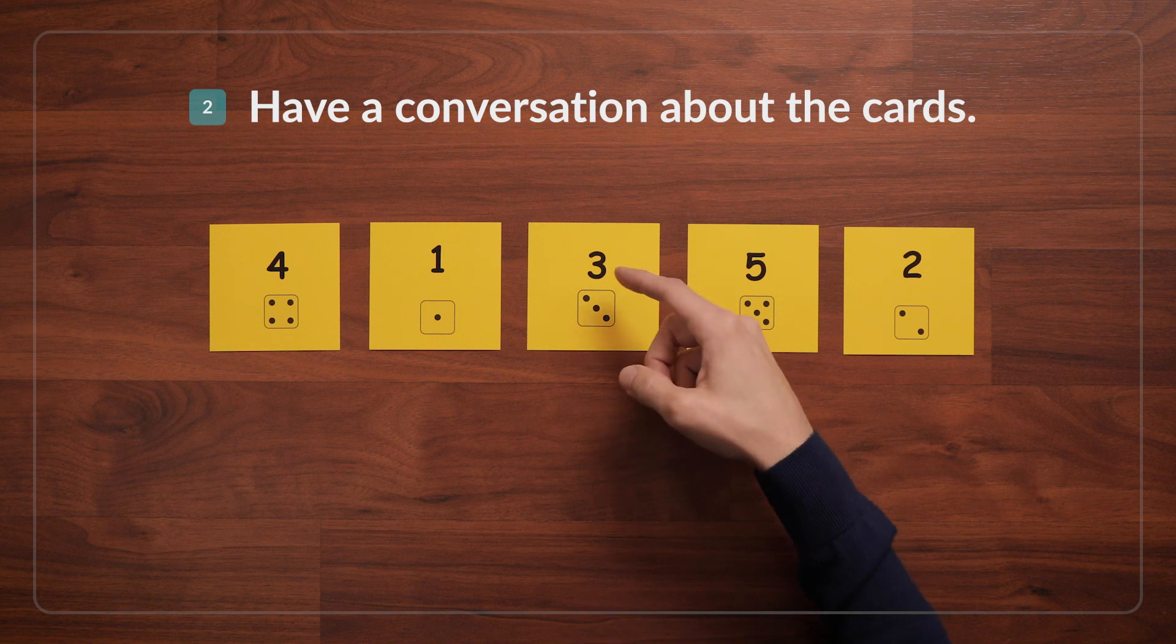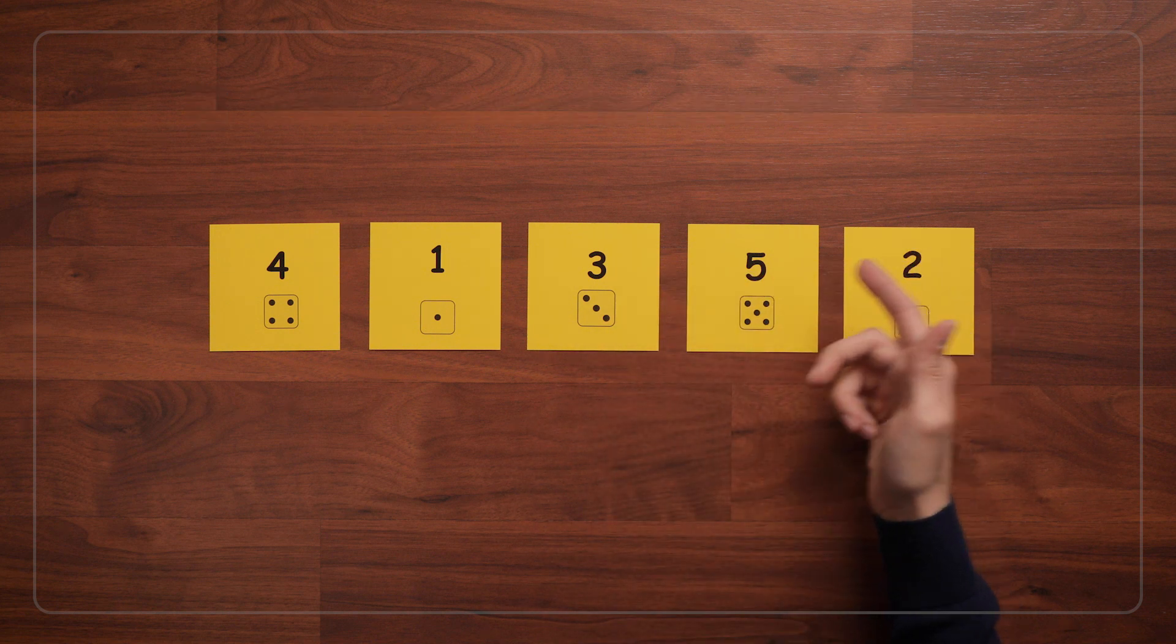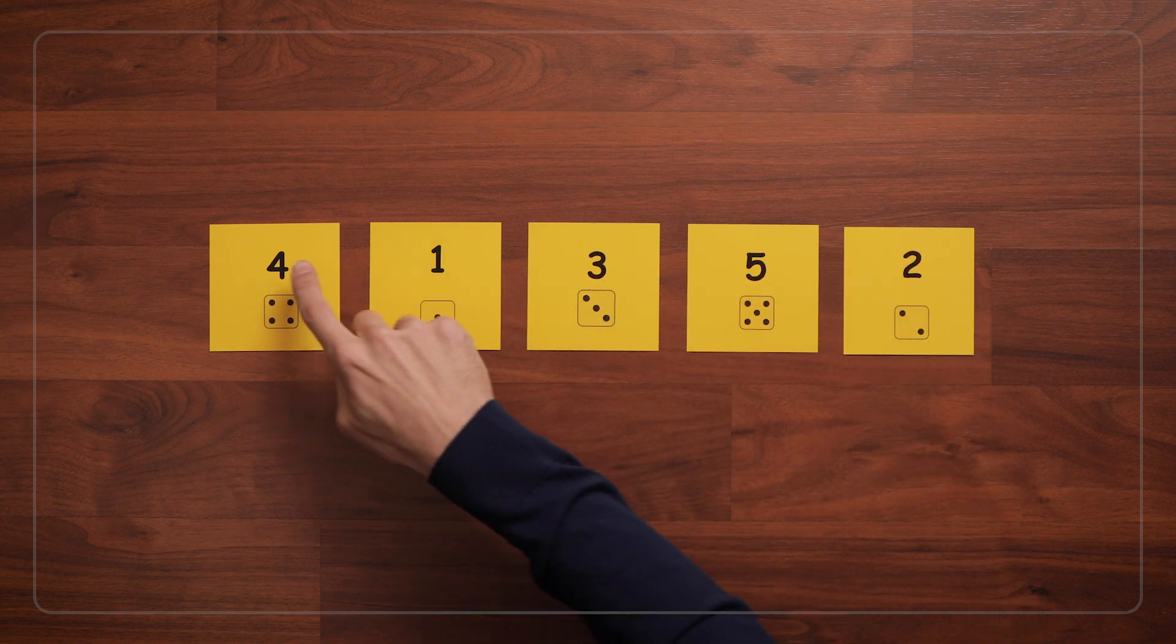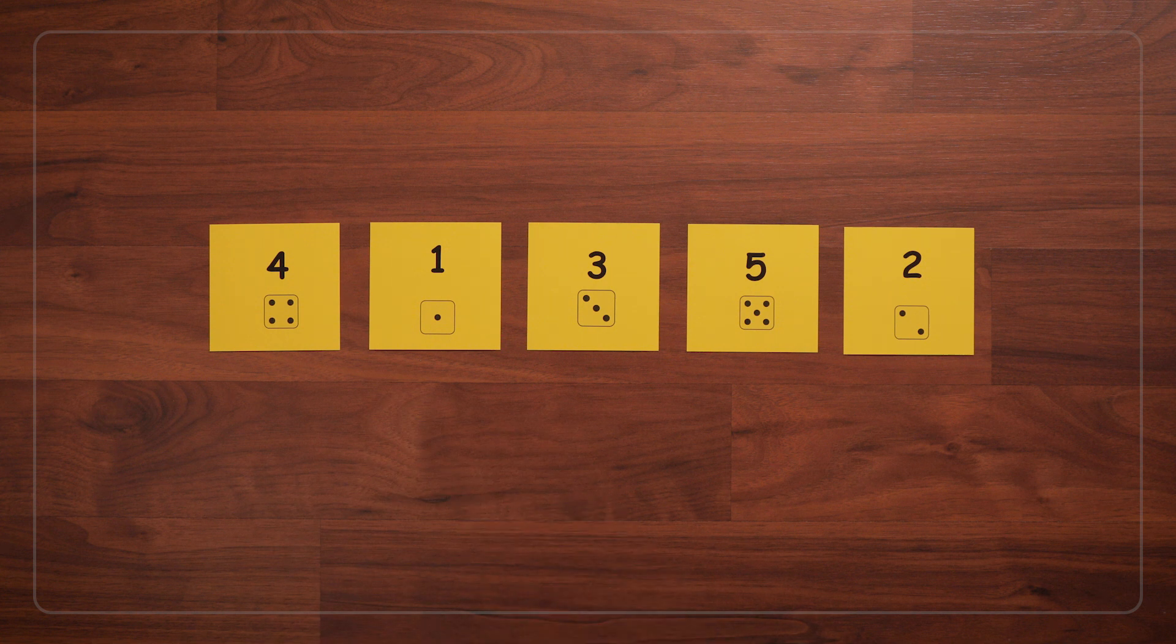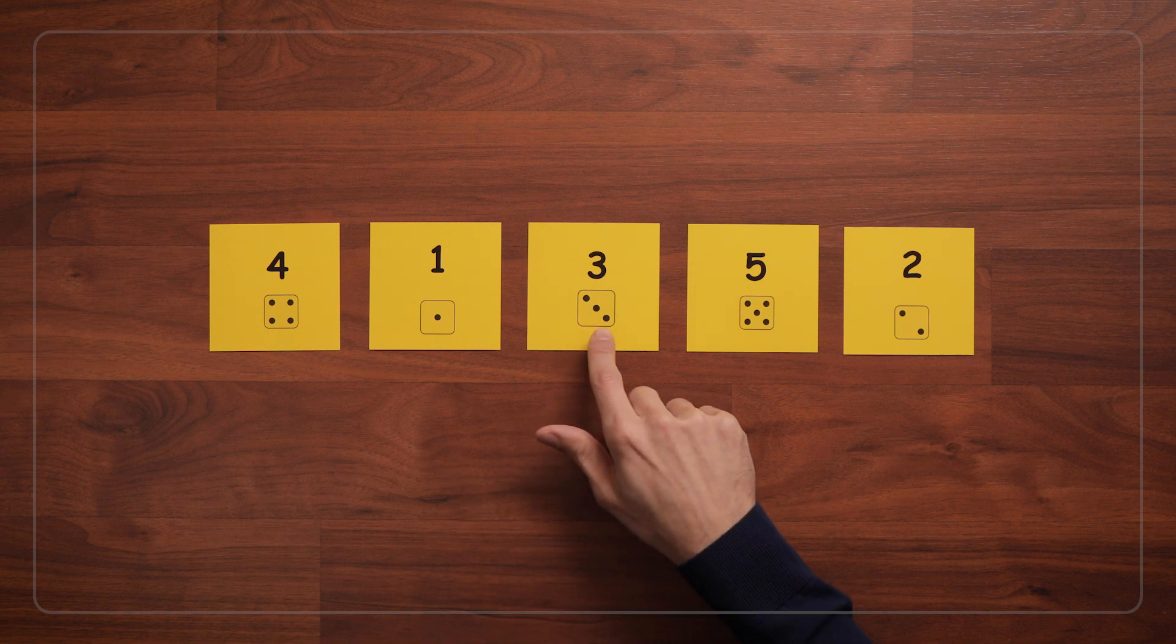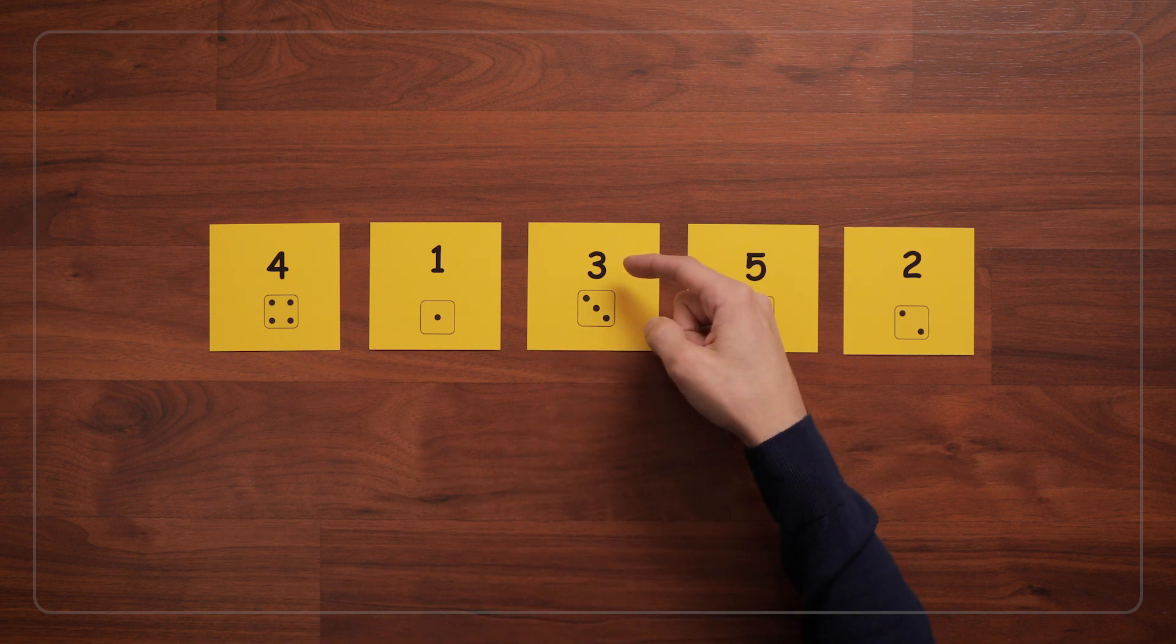Children might say, I see numbers. Yeah, these are numbers, like the ones we see around the classroom and in books. And what about these dots? Why do you think there are numbers above the dots?